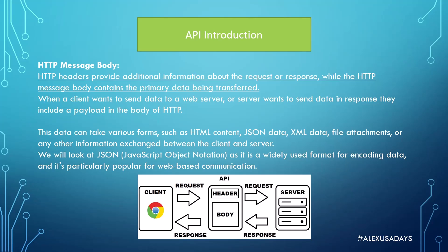The HTTP message body contains the primary data being transferred. When the client wants to send data to a web server, or the server wants to send data in response, they include a payload in the body of the HTTP message. This data can take various forms such as HTML content, JSON data, XML data, file attachments, or any other information exchanged between client and server. As QA engineers, we'll primarily look at JSON since that will be the most common data type you'll be verifying. JSON stands for JavaScript Object Notation — it's a widely used format for encoding data and is particularly popular for web-based communication.